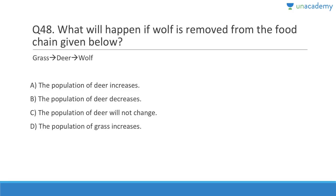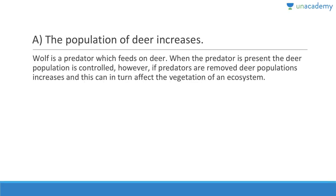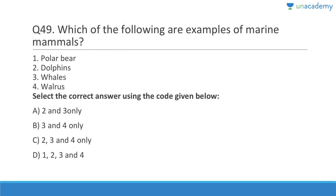Question 48: What will happen if the wolf is removed from the food chain? The population of deer will increase. Wolf is a predator which feeds on deer; when the predator is present the deer population is controlled. If wolves are removed, deer will increase and may decrease the population of vegetation.